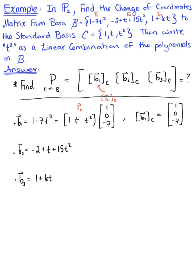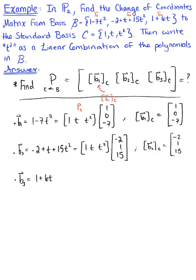We do the same with the other two vectors. Vector b sub 2 is defined by the polynomial minus 2 plus t plus 15t squared. So the change of coordinates matrix P sub C multiplied by the column vector of coefficients gives us negative 2, 1, 15. The coordinates of vector b sub 2 relative to the standard basis C is the column vector [-2, 1, 15].